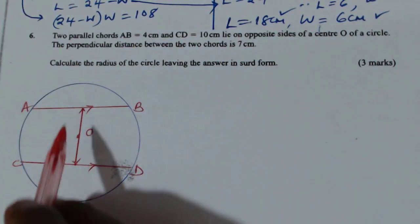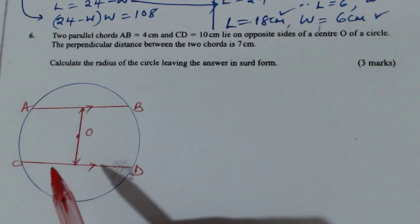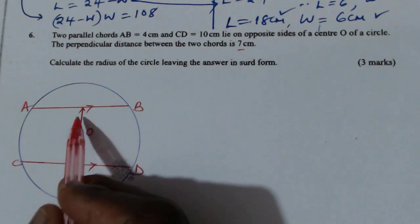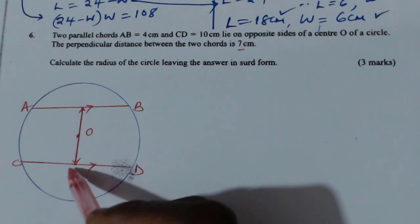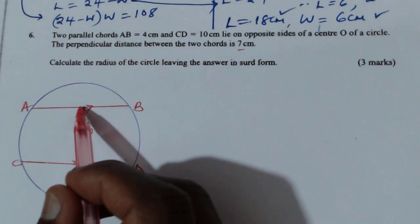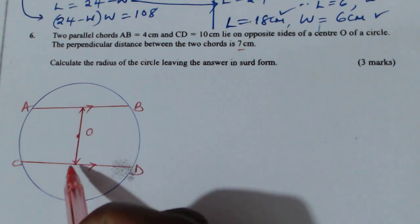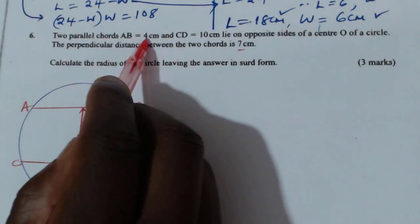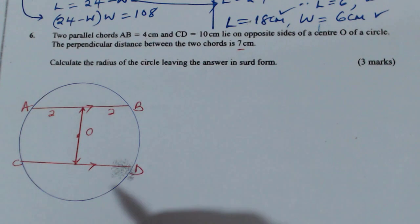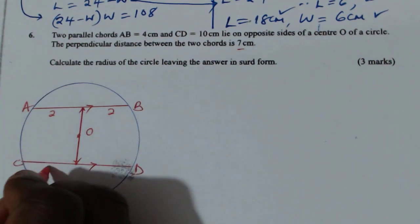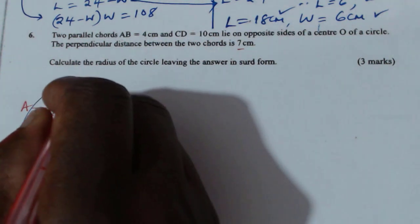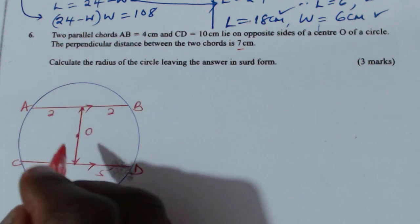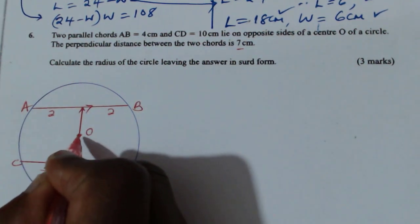This distance between the two chords is given as 7. One thing you are supposed to note: I have drawn this perpendicular bisector because it is going to bisect AB and CD. Given that AB equals 4, this will be 2 and this will be 2. Then CD is 10, so this will be 5 and this will be 5. Because the perpendicular bisector of these two chords will definitely pass through the center of the circle — it is a property.